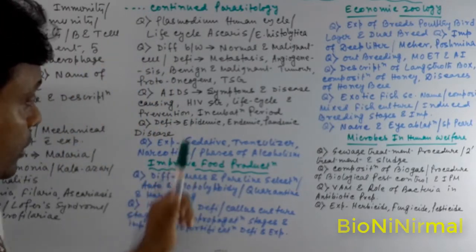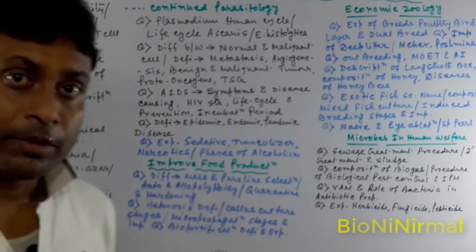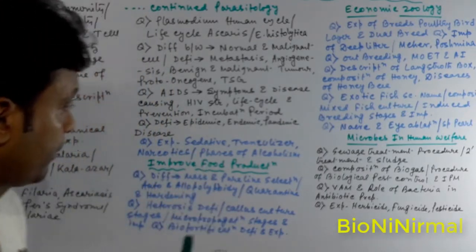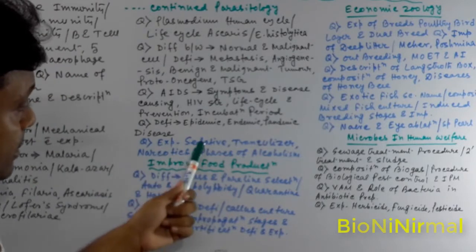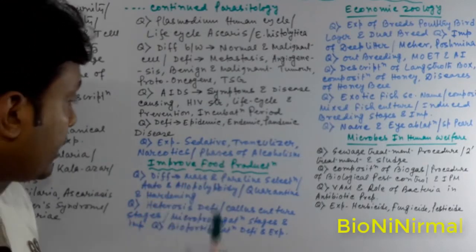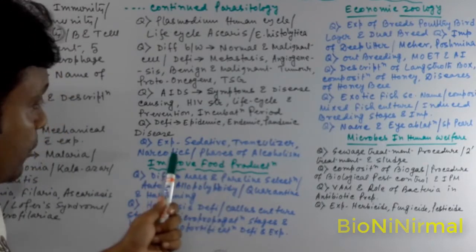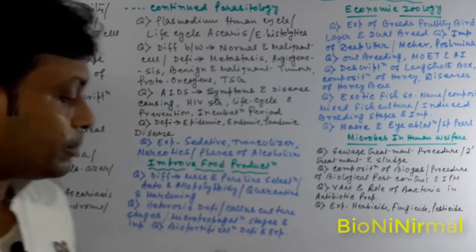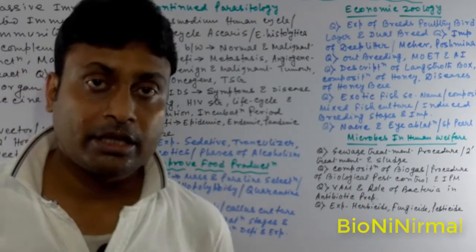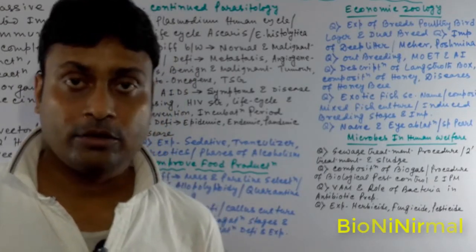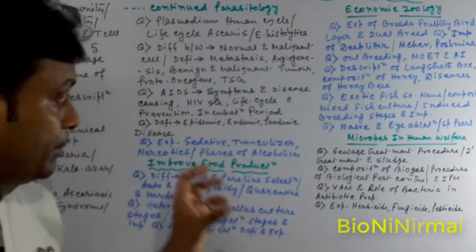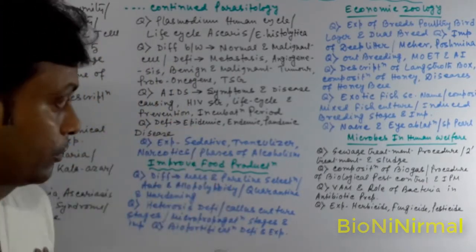Zoonotic disease: disease transfer from lower vertebrates to higher vertebrates — know the definition. Also: sedatives and tranquilizers, narcotics, and the phases of alcoholism — alpha, beta, gamma, epsilon — 2 to 3 questions from this.